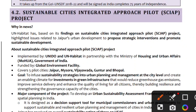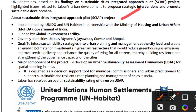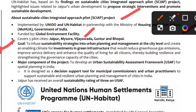There are five pilot cities covered: Jaipur, Mysore, Vijaywada, Guntur, and Bhopal. The main goal is that city-level management has a sustainable strategy, as well as investment in green infrastructure. The aim is to develop an urban sustainable assessment framework.